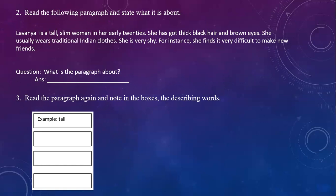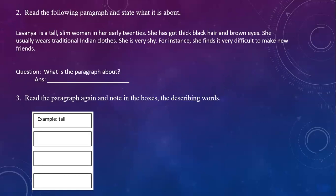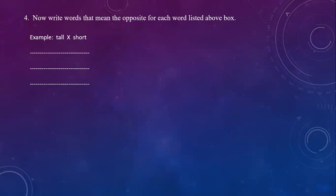More describing words from the Lavanya paragraph: slim, black hair, brown eyes. She is very shy. So the describing words are: tall, slim, black, brown, shy.